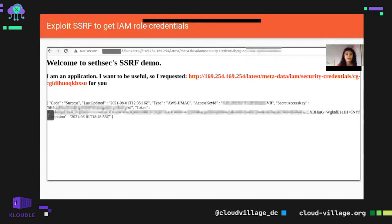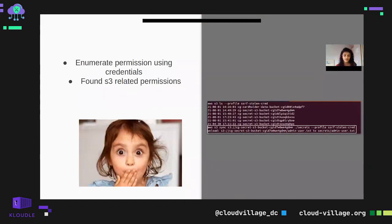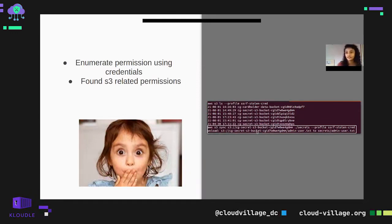We found the IAM role attached to the instance and obtained the security credentials. After getting the credentials, we enumerated permissions and were able to get admin data by using commands to copy data to our system. We were able to escalate from the EC2 instance IP all the way to admin-level access.